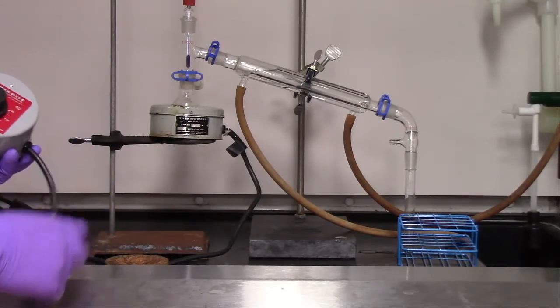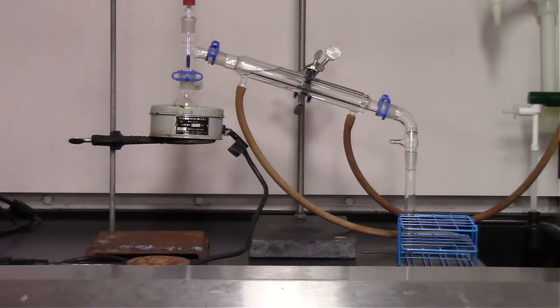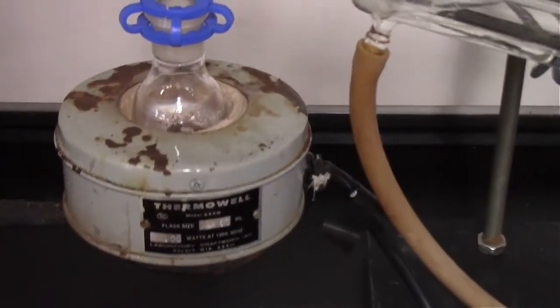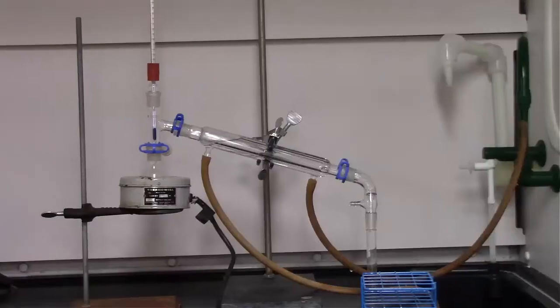So the variac's connected. We're going to put that at about 30% to 40% as it starts to make sure that it doesn't bump and we don't push the reaction a little bit too quick.